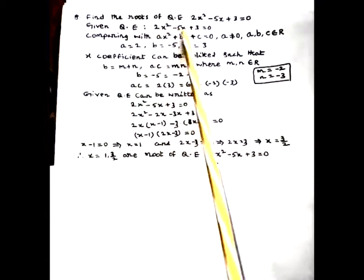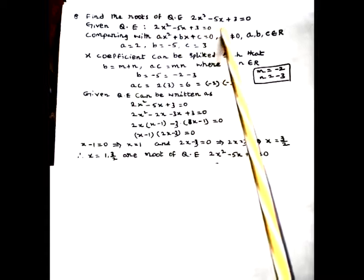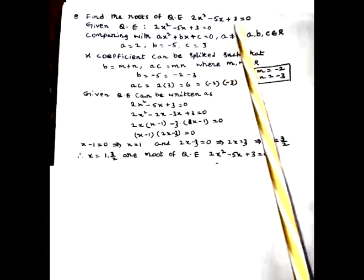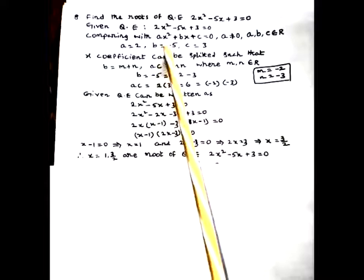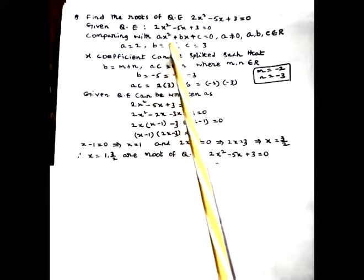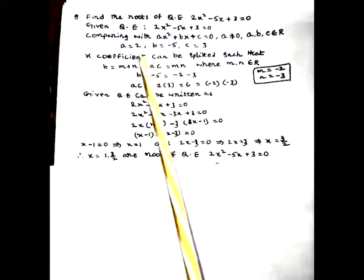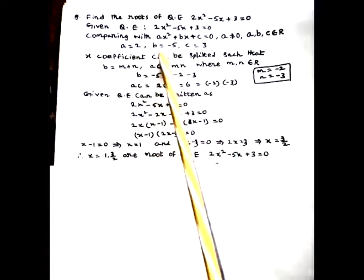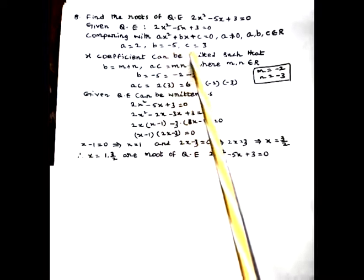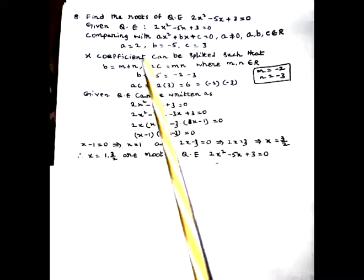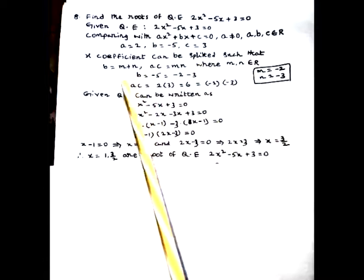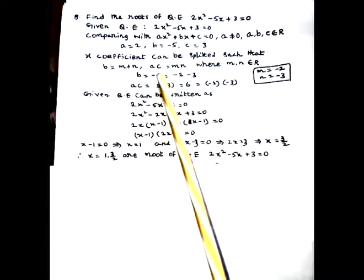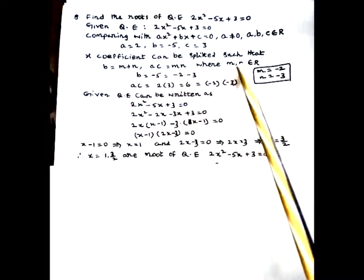Find the roots of the quadratic equation 2x² - 5x + 3 = 0. Comparing with ax² + bx + c = 0, we get a = 2, b = -5, and c = 3. The x coefficient b can be split such that b = m + n and product ac = mn, where m and n are real numbers.